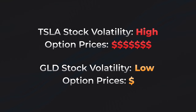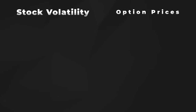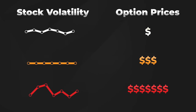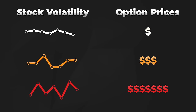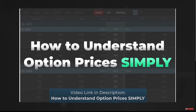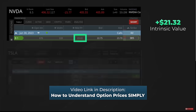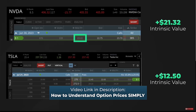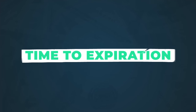This tells us that the stock's volatility is a huge factor in option pricing. The higher a stock's volatility, the more expensive its options will be, because with larger expected stock price changes come larger potential option price changes. This brings us to the next important option pricing factor: the amount of time left until expiration.